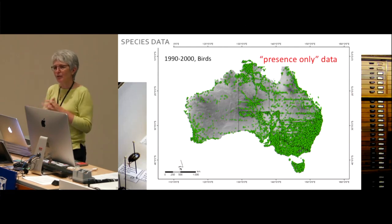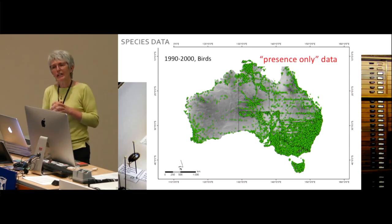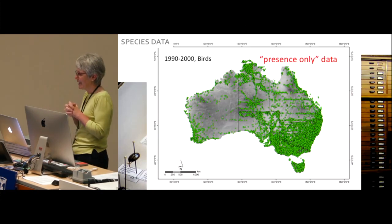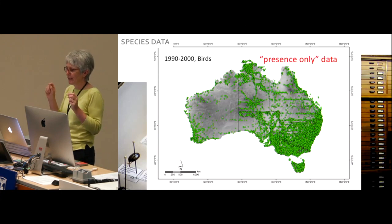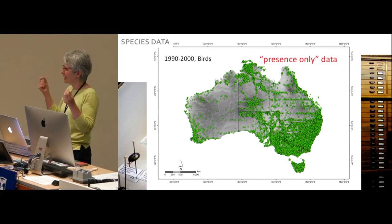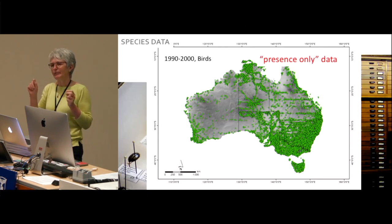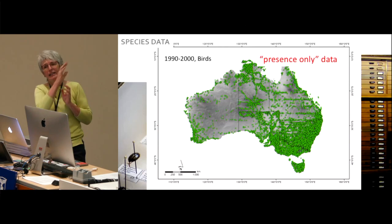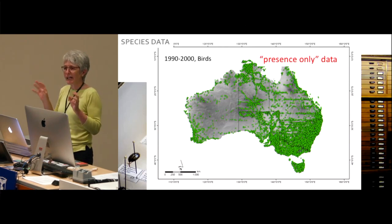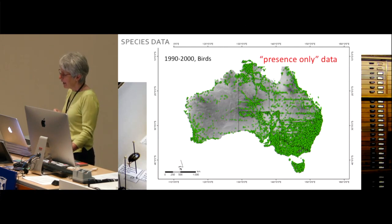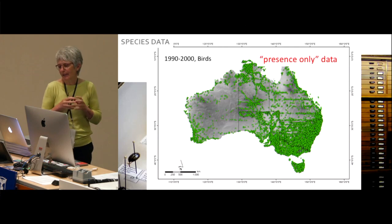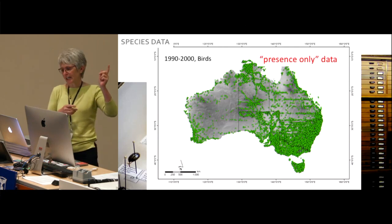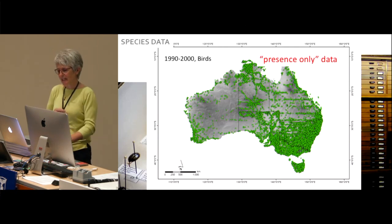This is problematic for modelling because it's not just showing us what conditions are suitable for species — it's also showing us where people like to observe things and where they submit data from, and it's very hard to tease the two apart. We call this presence-only data: we only have a record of where the species has been found, not of places that have been searched without finding it. This really is a major difficulty for us in getting sensible models.